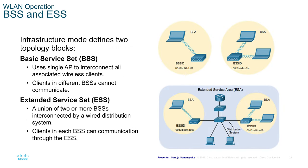BSS and ESS — basic service set and extended service set. The infrastructure mode has two topological blocks. The basic service set, or BSS, uses a single AP to interconnect all associated wireless clients. Clients in different BSSs cannot communicate with each other — each BSS ID is separate and cannot communicate across different BSS IDs.